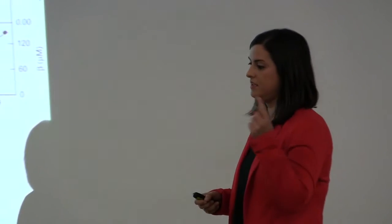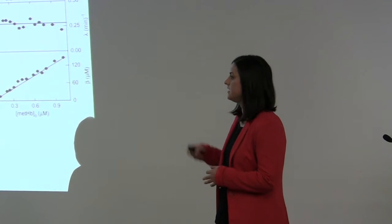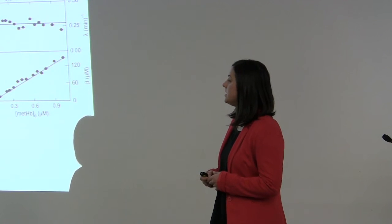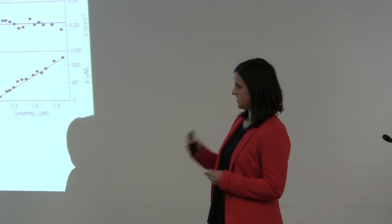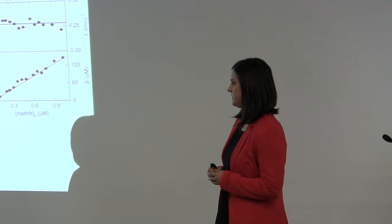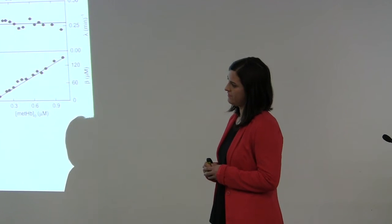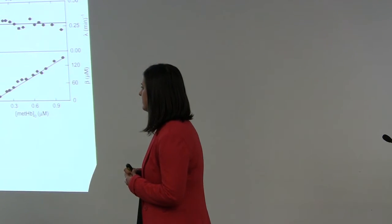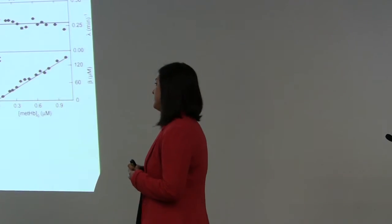Question: The experiments you've done are in the test tube, in solution — can you apply your model to an intact cell system? Response: Perhaps, but it's difficult because you have to include a lot of things. My experiment consists of putting hemoglobin and hydrogen peroxide together under different conditions and concentrations, and we developed the model to describe the behavior of that. You could, for example, construct a cell line with a hemoglobin construct that you could switch on and off, and then look at the effects. With the model, yes, that would be possible.